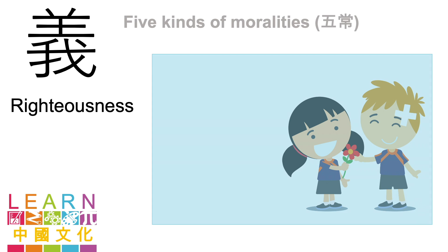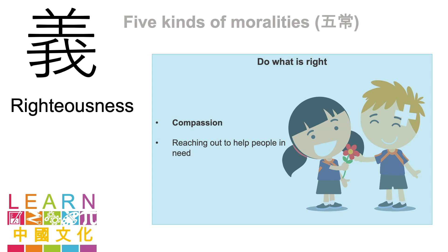The second morality is righteousness. Can you guess what idea this morality suggests? Righteousness suggests us to do what is right. And to do that, it is necessary for us to have compassion. With compassion, we feel bad when someone is going through a difficult time, and that bad feeling motivates us to reach out and help. Righteousness is a very important element in a loving relationship. A relationship without righteousness is a relationship without support, and it would not be able to go further.